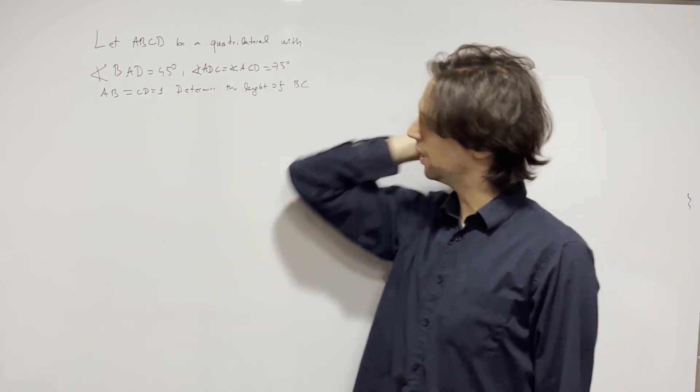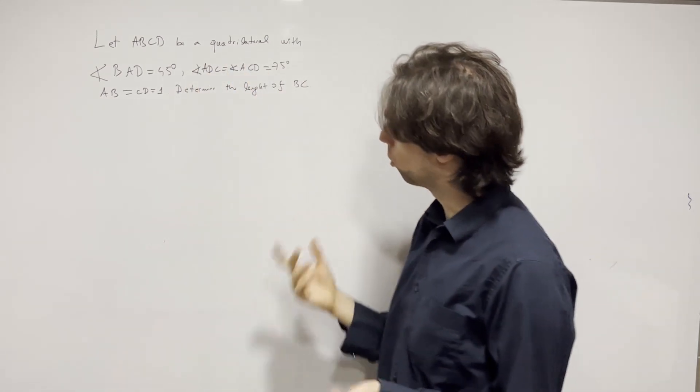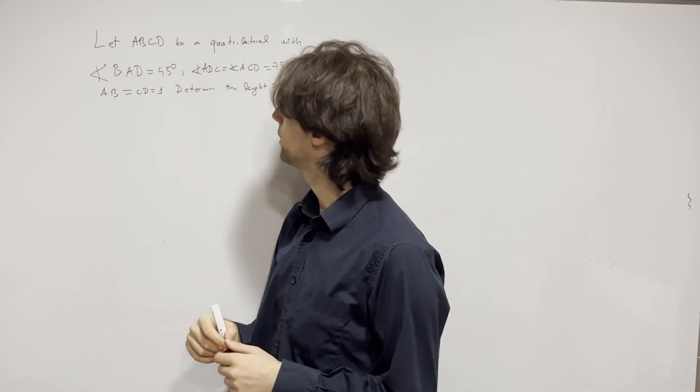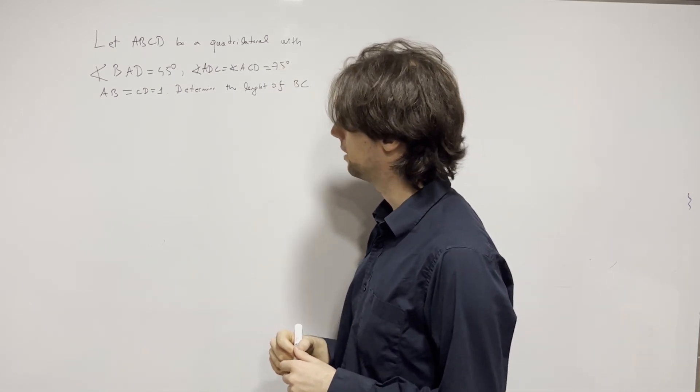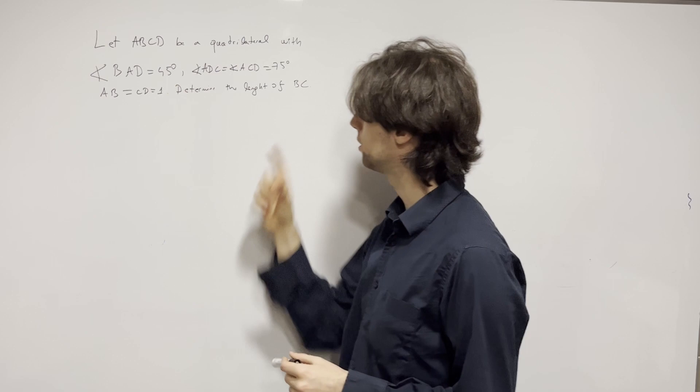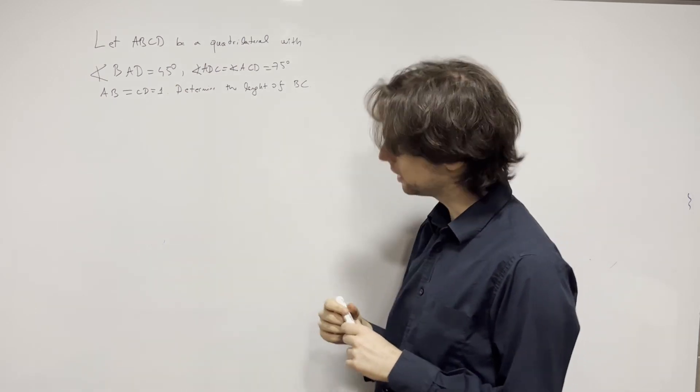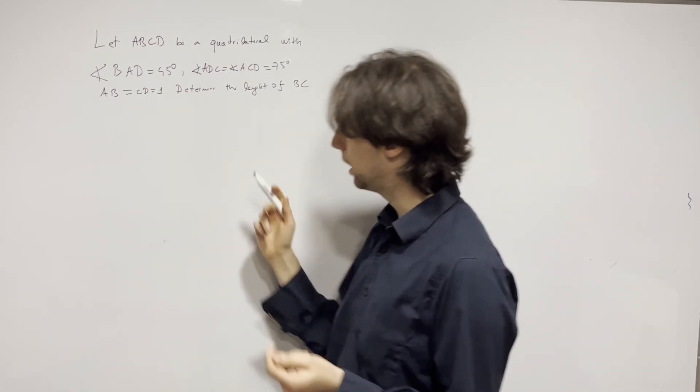If you'd like to go along with us, give it a go for the next 10 to 15 minutes. Draw the diagram first. Now let's begin: ABCD is a quadrilateral, angle BAD is 45, angle ADC and ACD are 75, AB and CD are one. Determine the length BC.